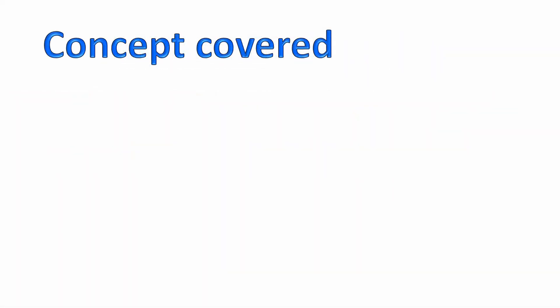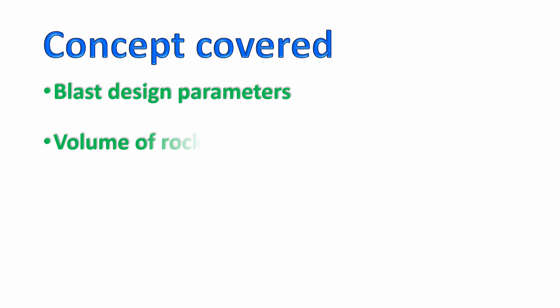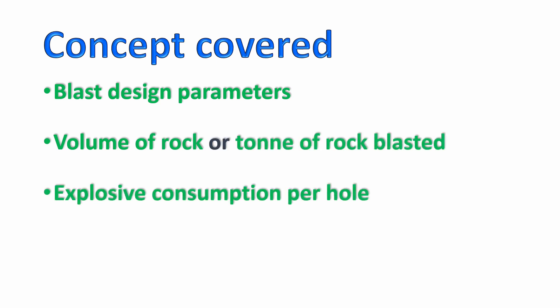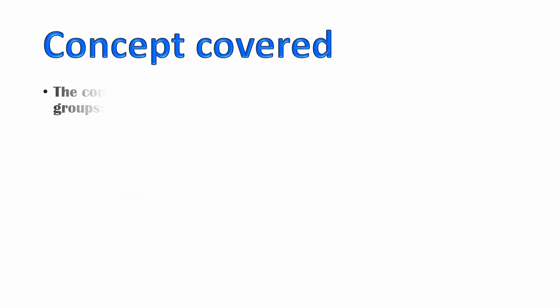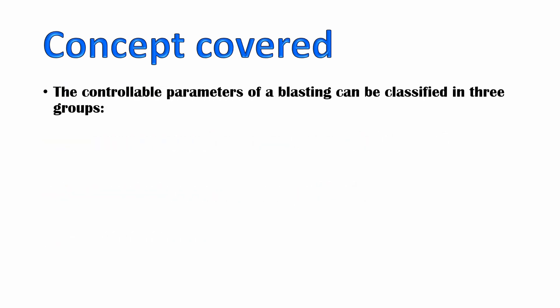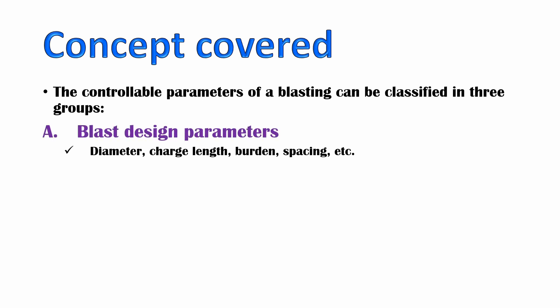In the previous classes we have covered blast region parameters, volume of rock or ton of rock blasted, explosive penetration per hole, and the powder factor. If you have not seen the previous lectures please click on the link above. Also we have seen the controllable parameters of blasting divided into three groups: the blast region parameters, which includes the diameter, charge length, burden spacing, etc.